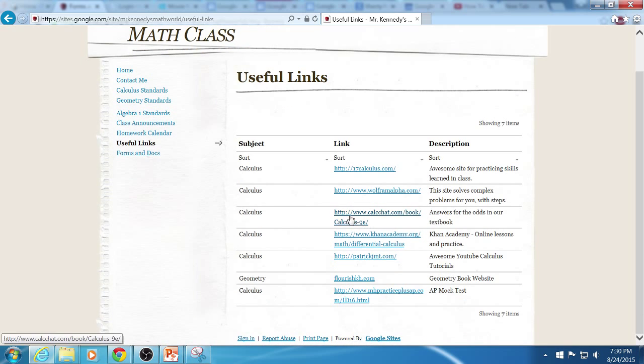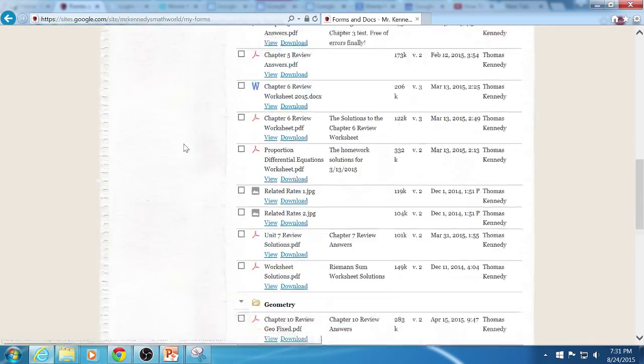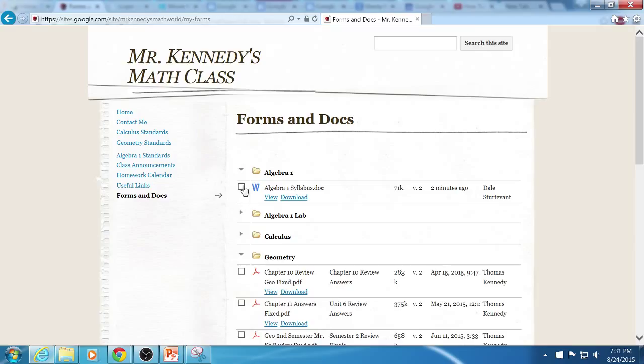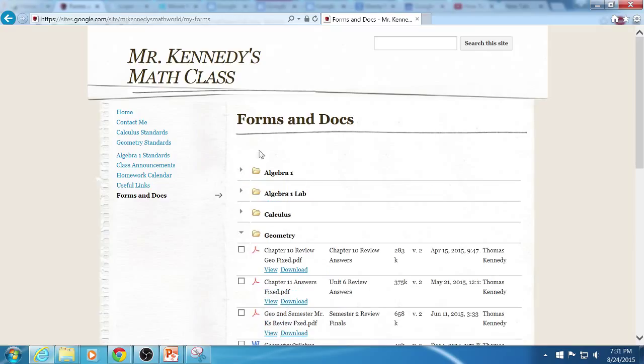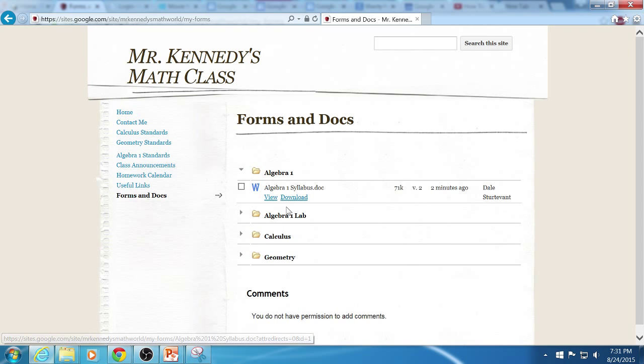The useful links tab just has links to useful websites. Forms and documents has all the forms and documents for the class. I'm going to post stuff here like answers to review worksheets or answers to worksheets we had in class, that sort of thing. If you're having a hard time looking at this, you can close all the folders and it's pretty organized, so you can open algebra 1 and look at what's in algebra 1. You can open calculus and look at what's in there.